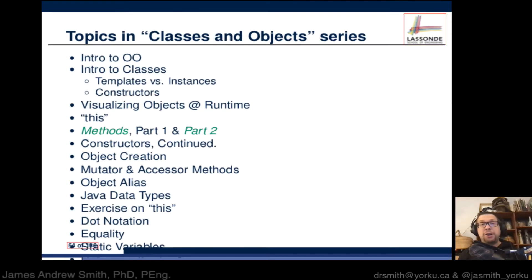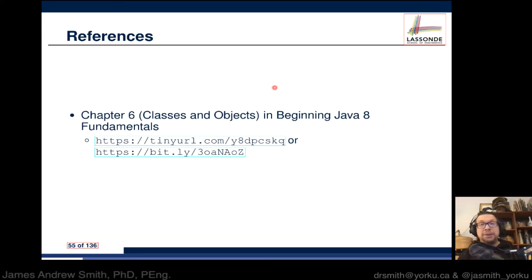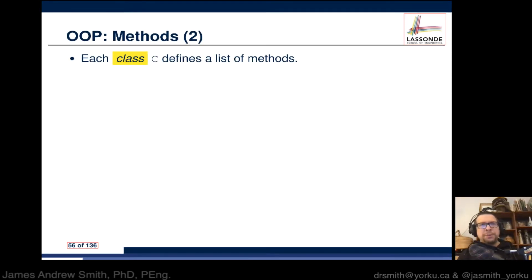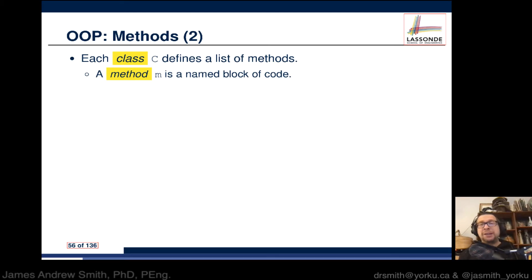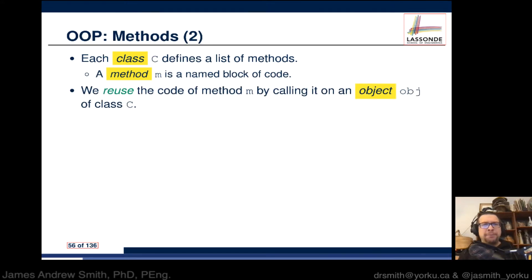Hi everyone, today we're continuing our discussion on methods - part two of two. You can find more about methods in chapter six of the Beginning Java 8 Fundamentals book, with links to the ebook in the York U library. In object-oriented programming in Java, we have a class - call it class C - which is a blueprint for objects. Inside that class we can have definitions of blocks of code called methods, which we reuse by instantiating objects from the class.